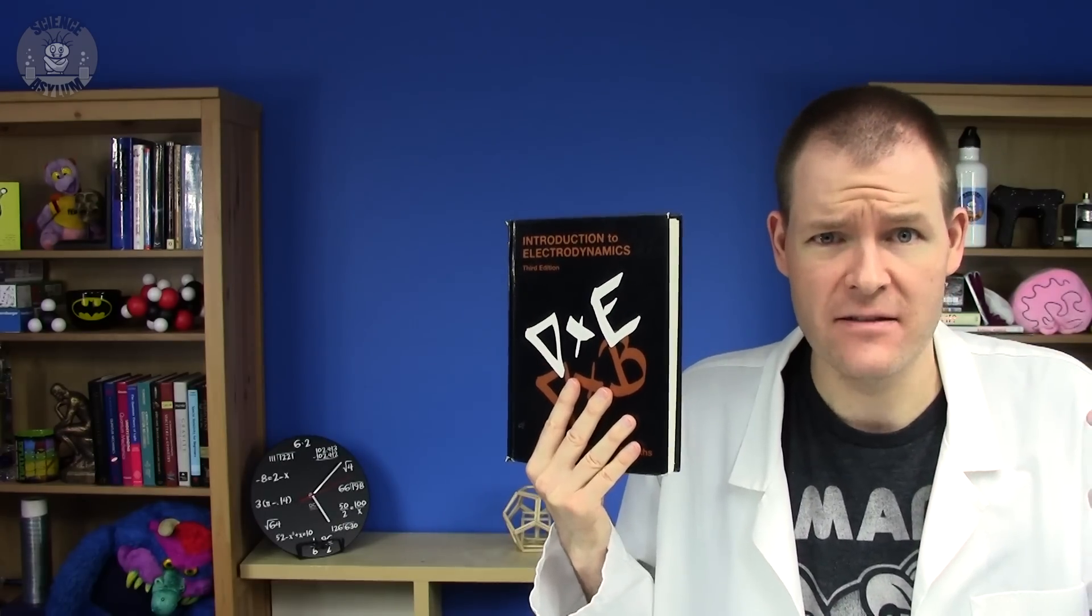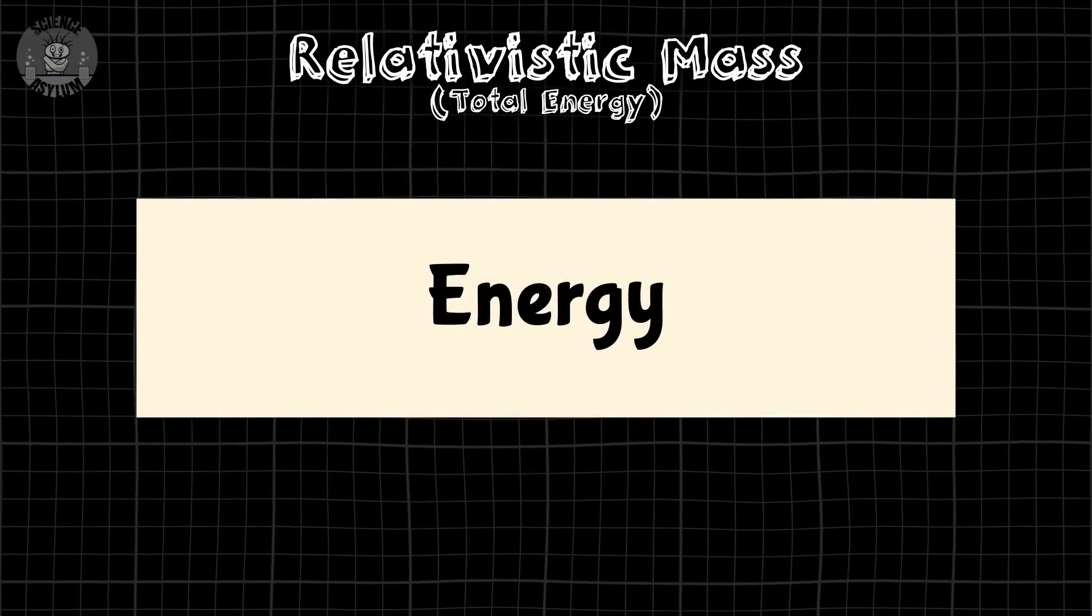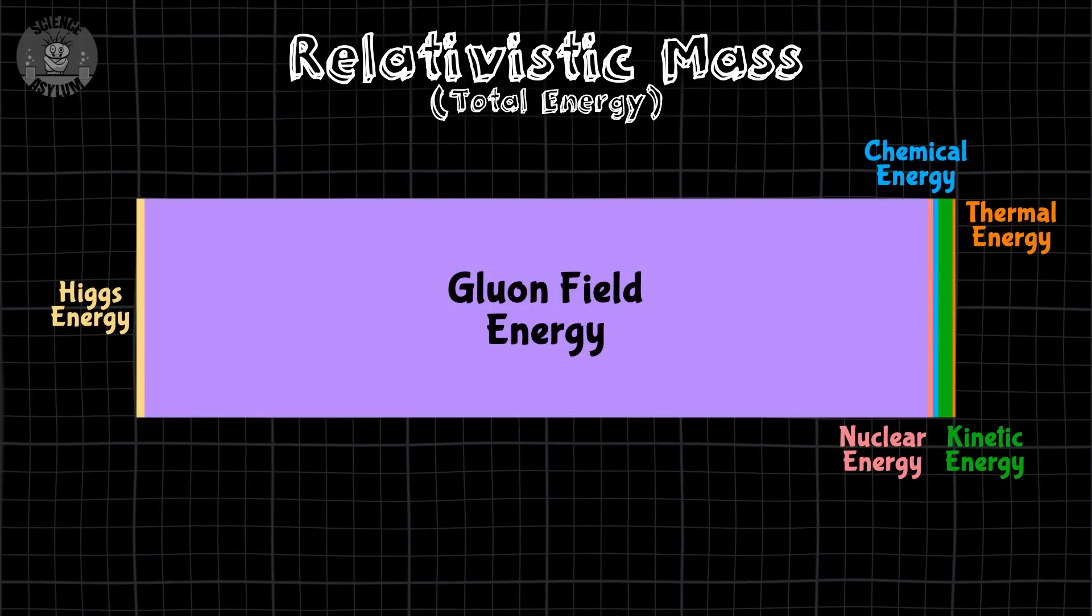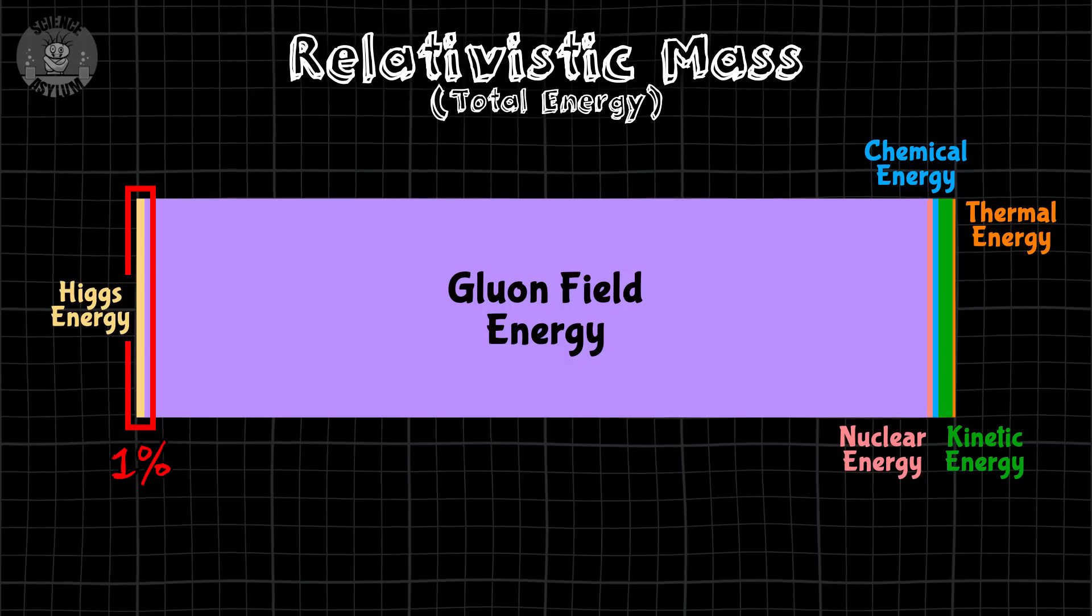So, what the heck is mass? When you measure the mass of something, anything, you're measuring its energy content. That energy can be made up of a wide range of different types. But in the end, it's all about energy. And just so I make this abundantly clear, less than 1% of that is from the Higgs field.